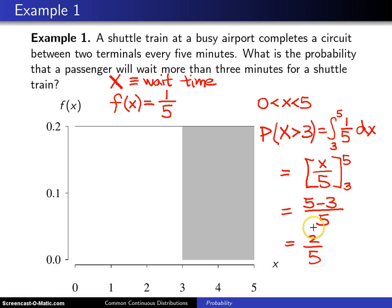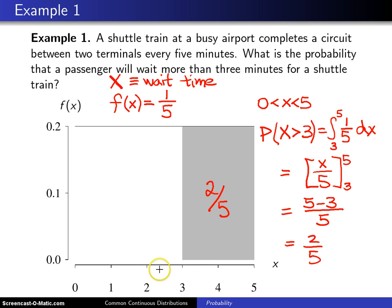So two-fifths is the probability that the passenger will have to wait more than three minutes. That probability is indicated geometrically by the shaded area of two-fifths. The balance point of this distribution is two and a half — that's the average waiting time — but the probability of waiting three minutes or more is two-fifths.